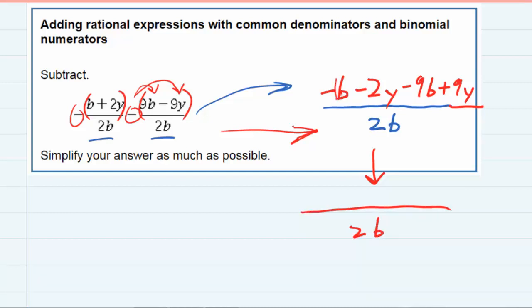Looking for like terms, I've got minus 1b and minus 9b. If I combine those together, they give minus 10b.